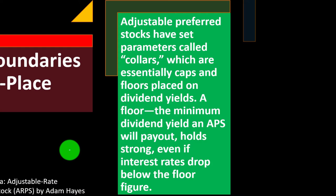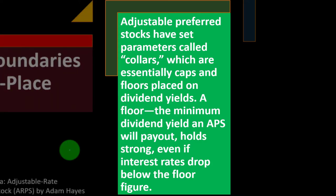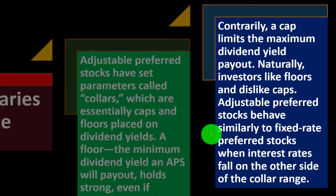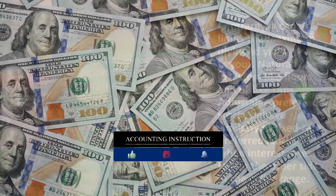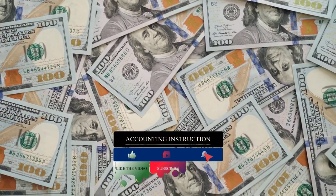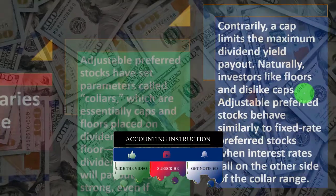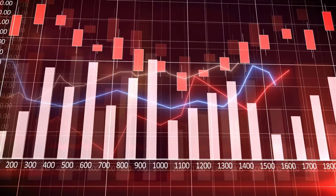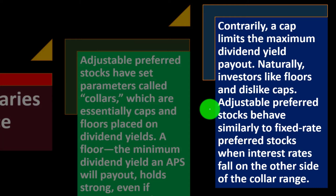Adjustable preferred stocks have set parameters called collars, which are essentially caps and floors placed on dividend yields. A floor is the minimum dividend yield an ARPS will pay out — it holds strong even if interest rates drop below the floor figure. Contrarily, a cap limits the maximum dividend yield payout. Naturally, investors like floors and dislike caps: a floor guarantees a minimum payout even if the index drops, while a cap means the payout won't rise beyond a set level even if the index spikes.